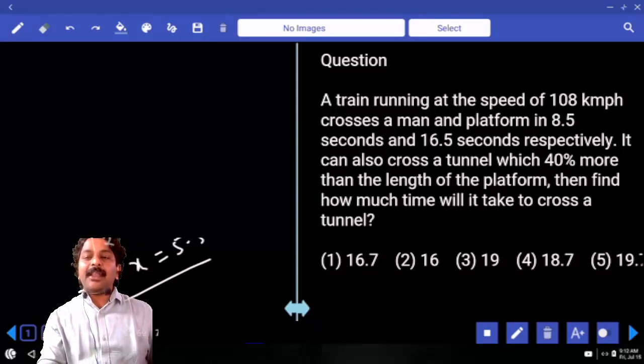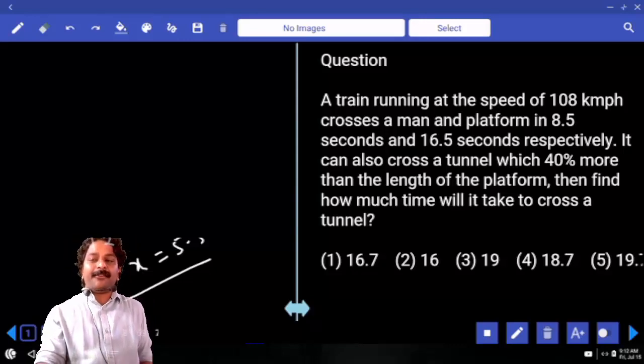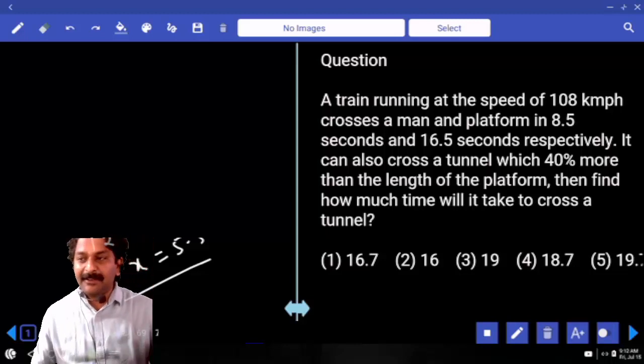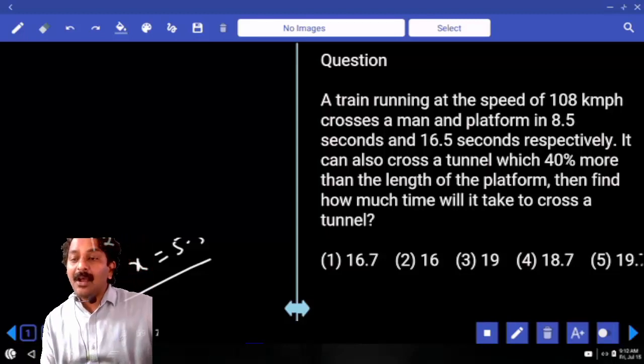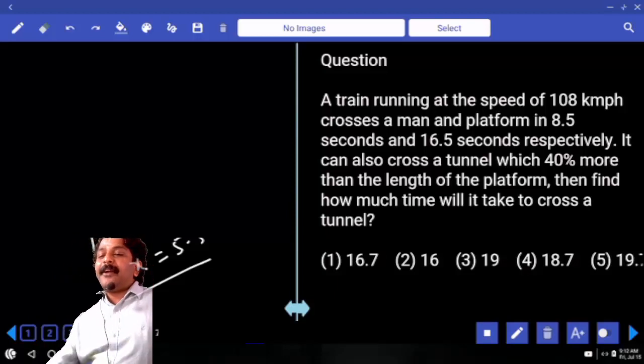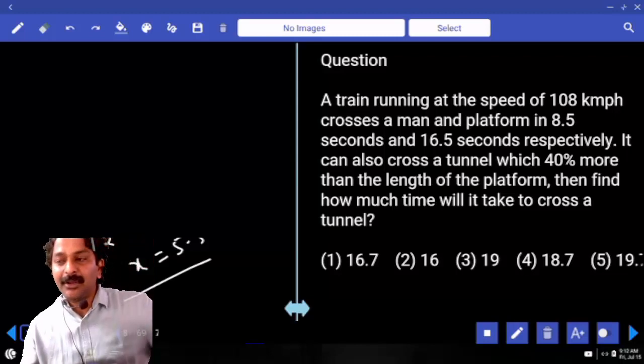A train running at a speed of 108 km per hour crosses a man and a platform in 8.5 seconds and 16.5 seconds respectively. It can also cross a tunnel which is 40% more than the length of the platform. Then find how much time will it take to cross the tunnel.